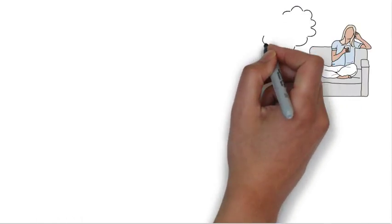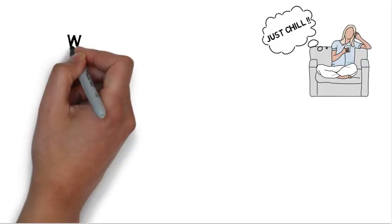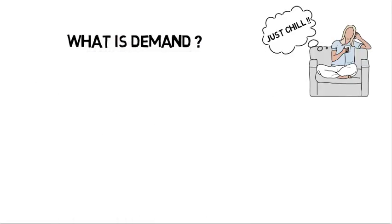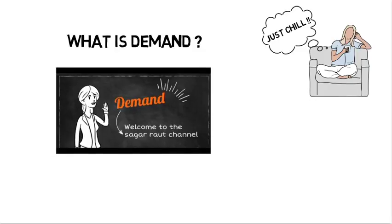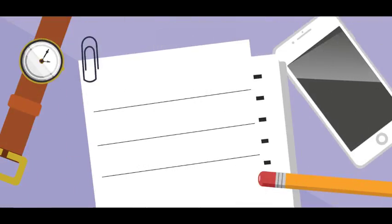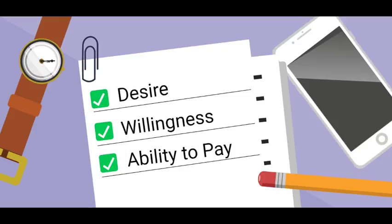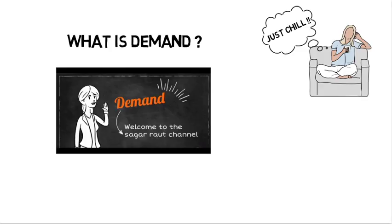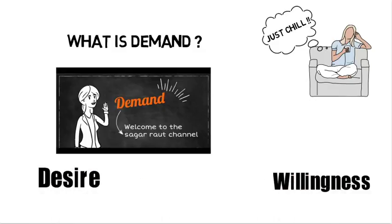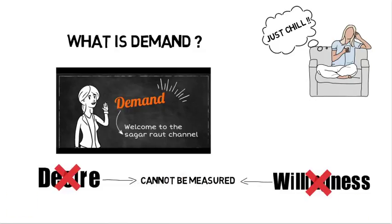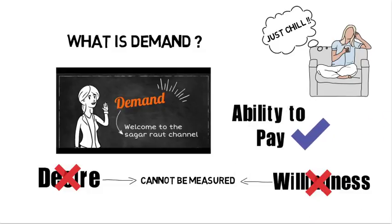This is actually pretty easy to understand. However, you need to know what demand actually means. Demand is the combination of three things: the desire for an asset, the willingness for an asset, and the ability to pay for it. Desire and willingness are things which are intangible, hence to measure them is not possible. However, our ability to pay is something that we can measure.